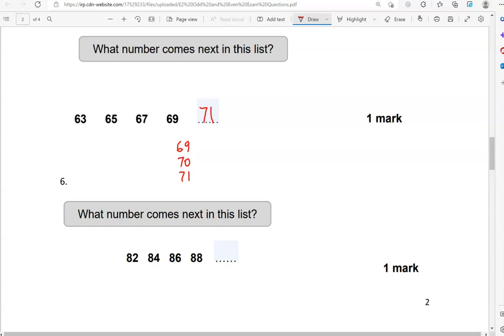What number comes next in this list again? We've got 82, 84. So we're adding 2. Then adding another 2 to go to 86. 2 more to go to 88 and then 2 more to go to 90. So 88, 89, 90.